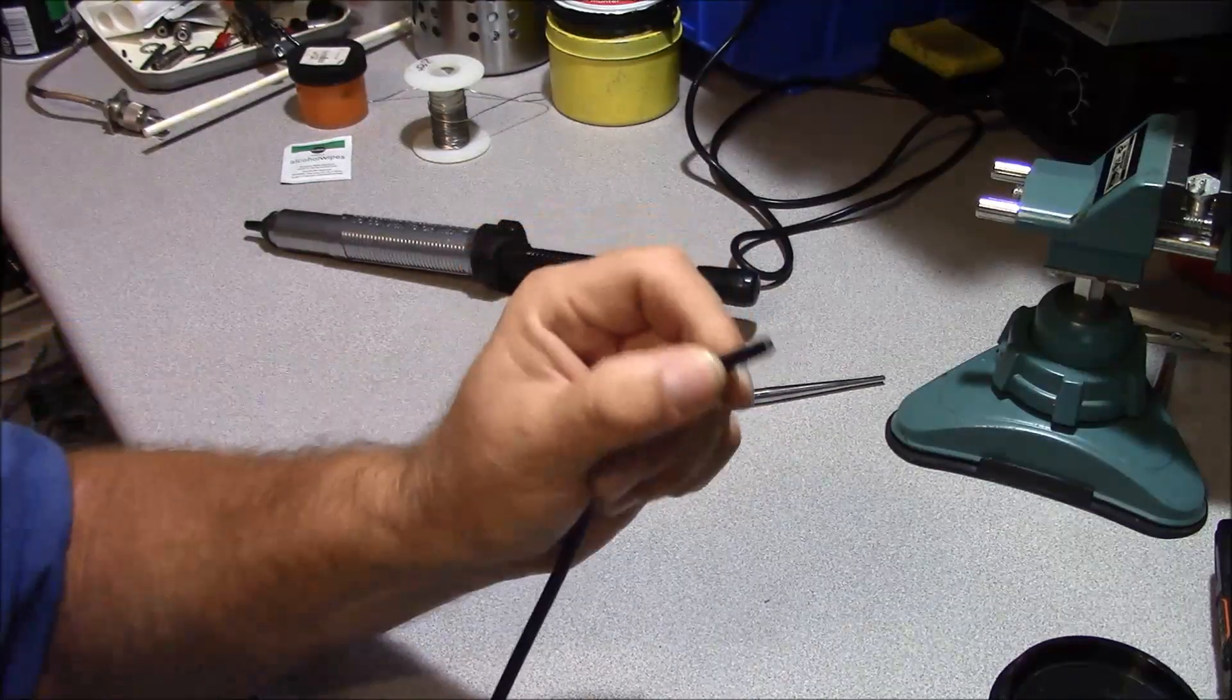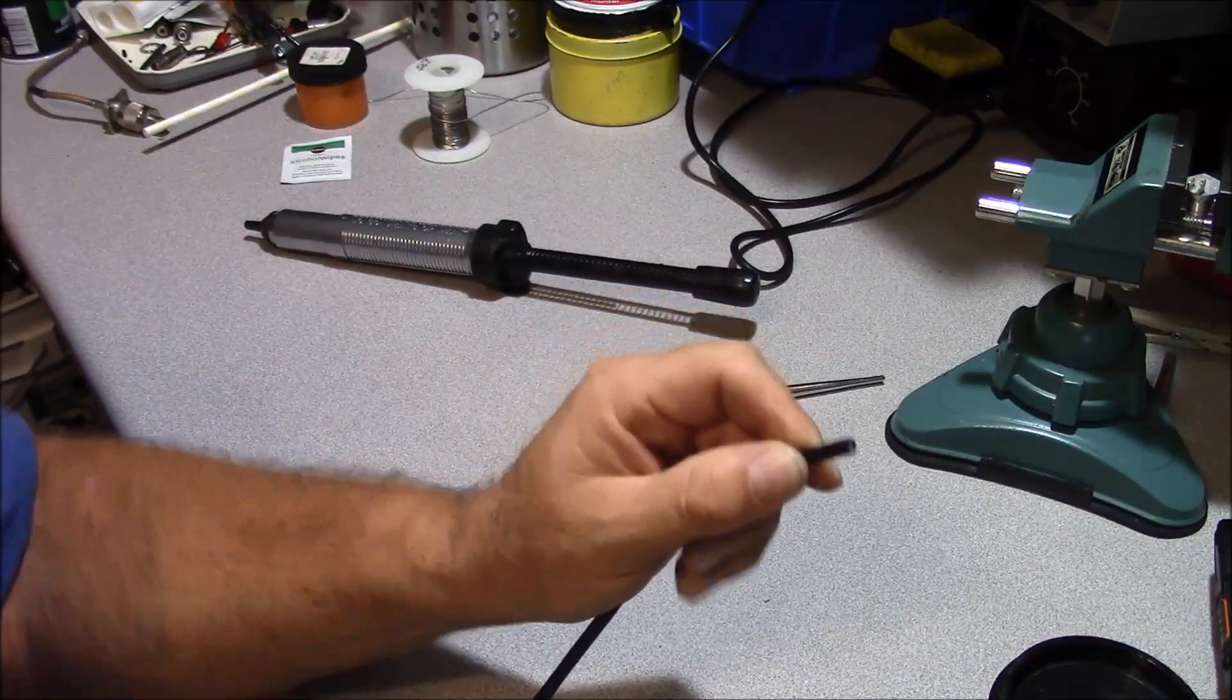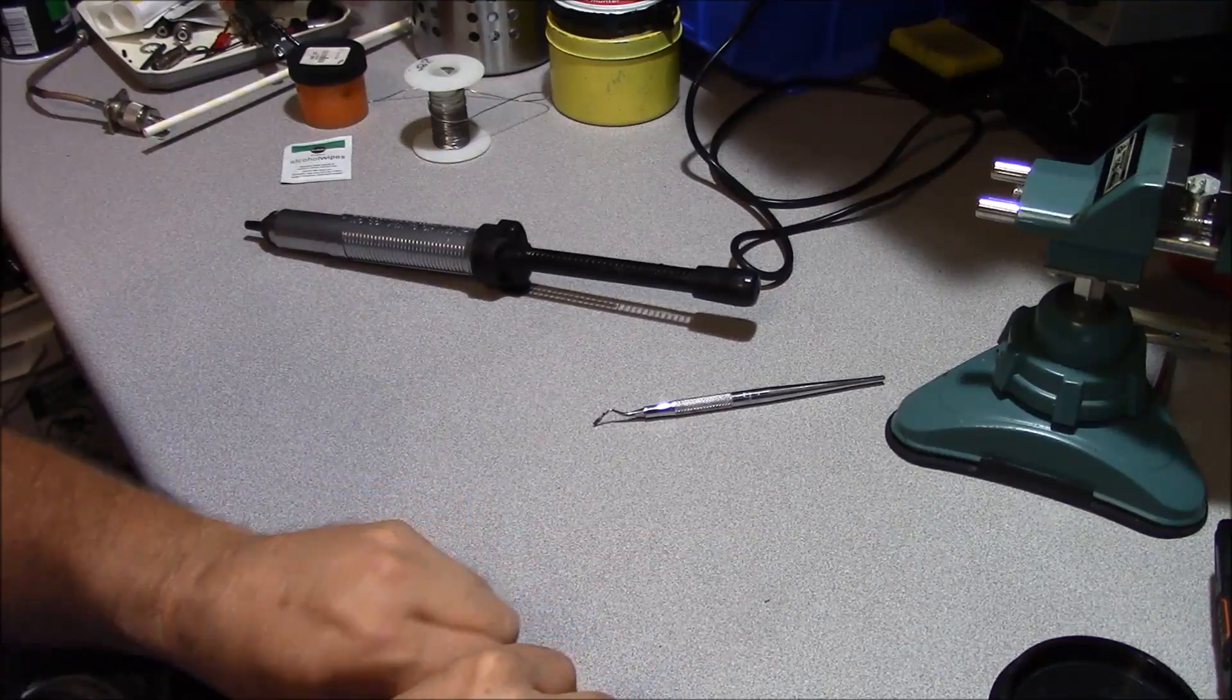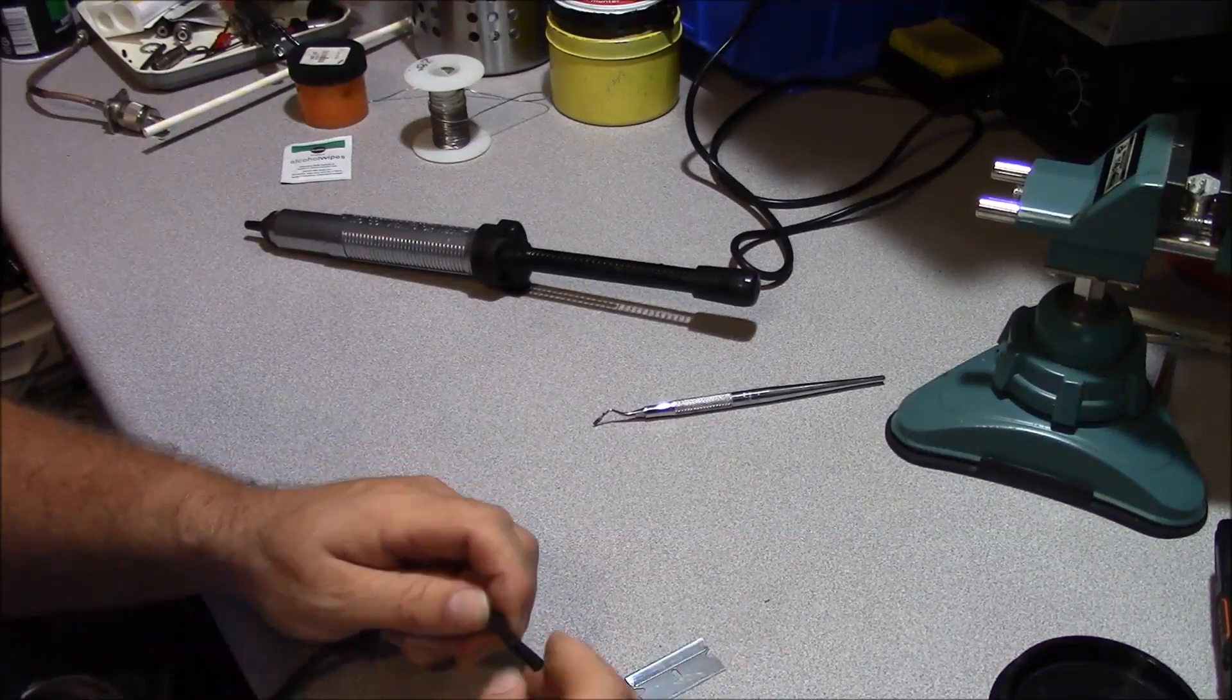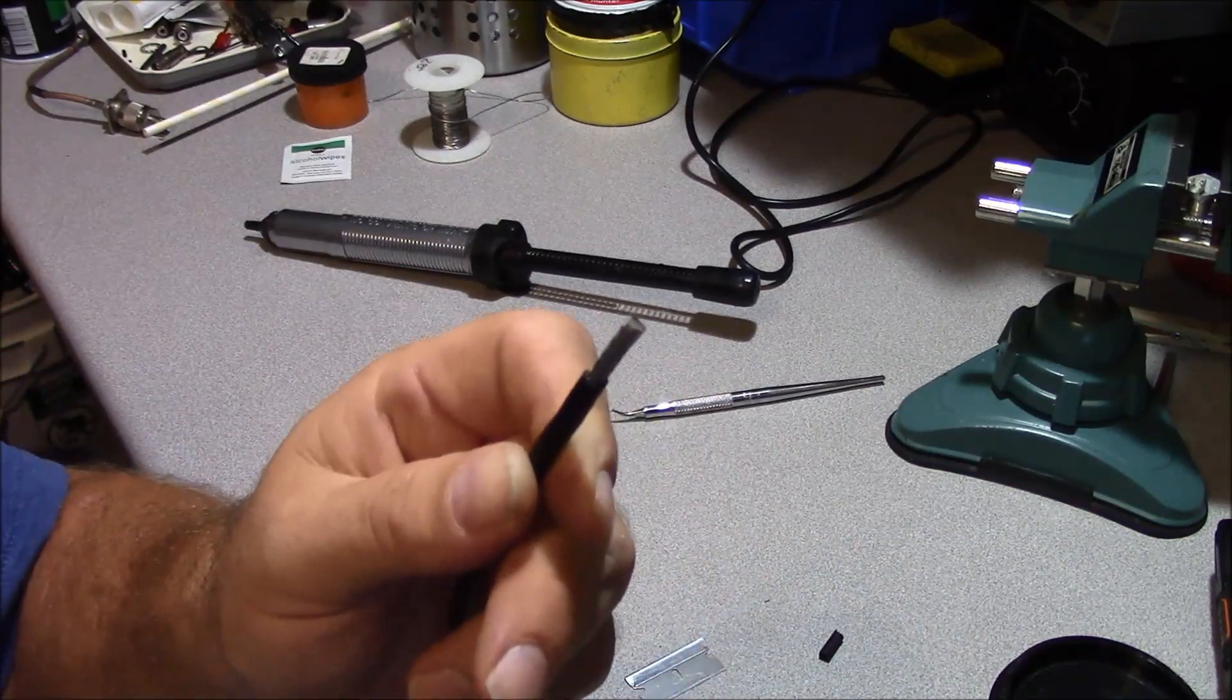Now we're going to prep our cables. So we want to go maybe a centimeter and a half back, or three quarters of an inch, with a razor blade, and remove our jacket. And that exposes our shield.